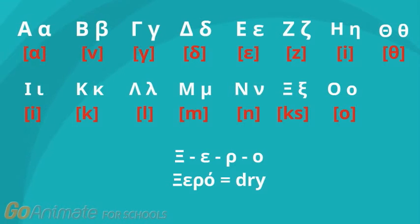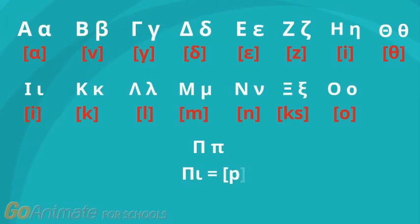We can now spell and read another word. Ksi, E, R, O. Ksero. Pi is read as P, as in spot. Pi, P.